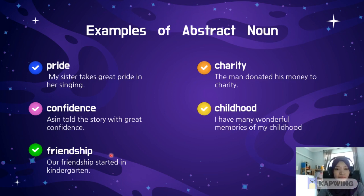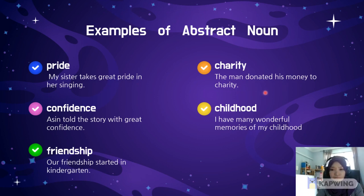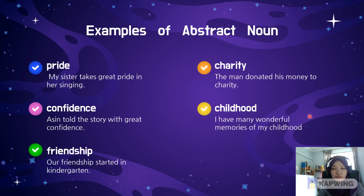So it is abstract. The third example is 'friendship'. 'Our friendship started in kindergarten.' Friendship can't be touched or measured. Next is 'charity'. 'The man donated his money to charity.' And the fifth example of abstract noun is 'childhood'. 'I have many wonderful memories of my childhood.' Of course, you can only remember the memories of childhood — you can't touch them.